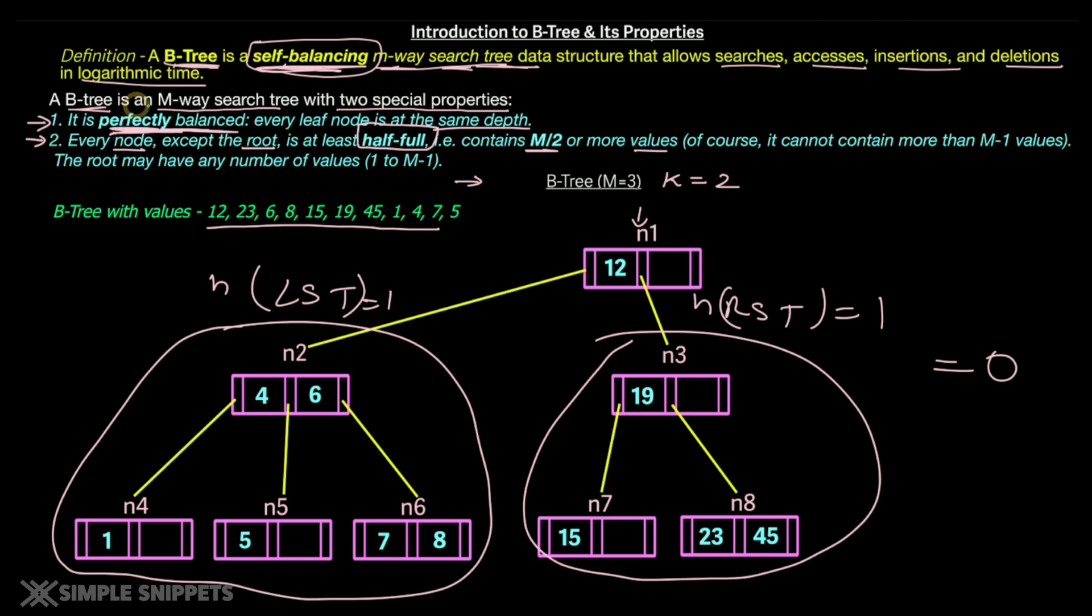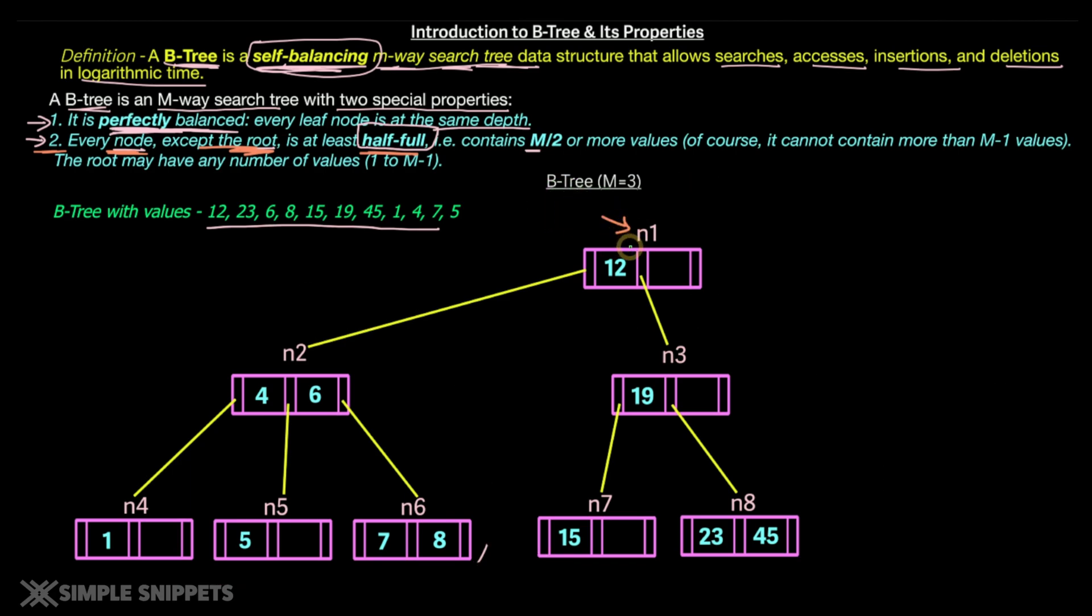What about the other rules that we just discussed? So we saw that a B-tree is an M-way search tree with two special properties. One is perfectly balanced. So what about this rule? That is every node except the root node is at least half full. So let's take a look at the different nodes. So node N1 is the root node. How many number of keys can it store? Each node can store maximum two keys. How many are there currently in N1? We have one key. So it is half full, correct? Similarly, N2 is completely full. N3 is half full. N6 is full. N8 is full. N7, N5 and N4 are half full. Which means that every node except the root node is at least half full.